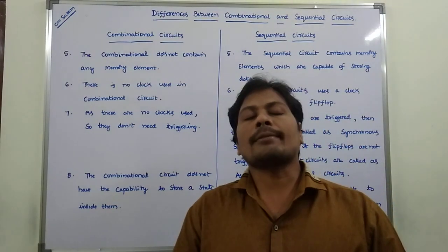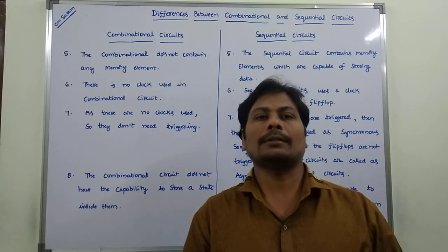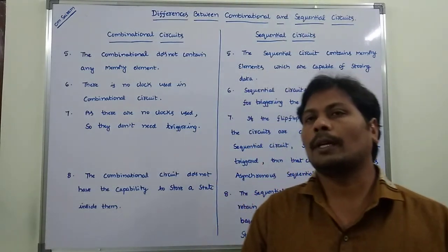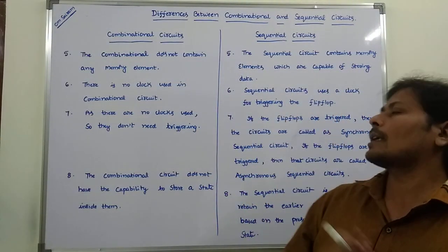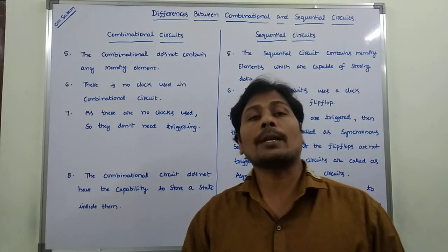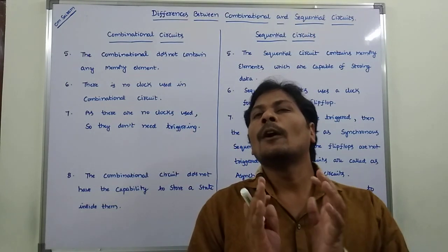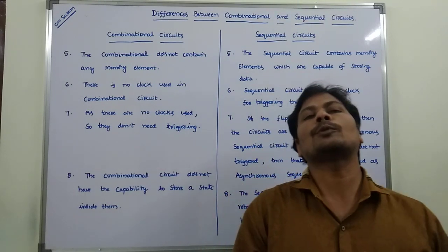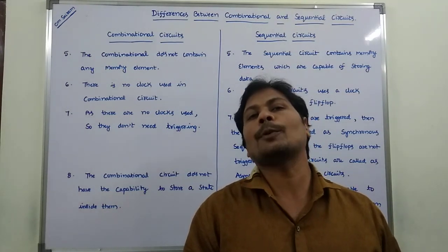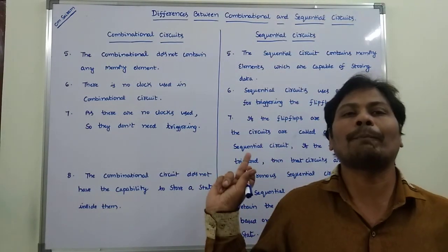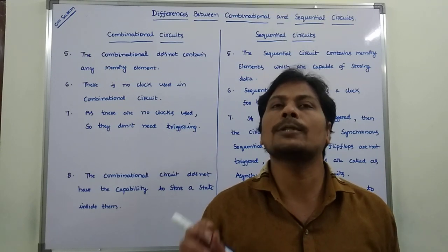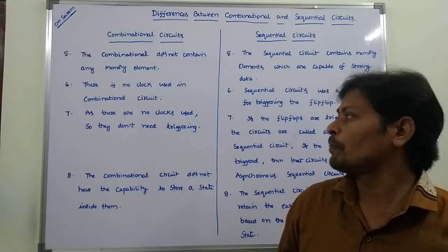In the combinational circuit, there is no usage of a clock — clocks are not used in combinational circuits. But in the case of sequential circuit, the clock is used for triggering the flip-flop. For triggering the flip-flop, we have to use a clock; that clock is used in the sequential circuit. There is no triggering of the flip-flop in the combinational circuit, so there is no clock used in combinational circuits.